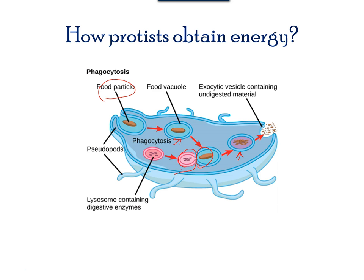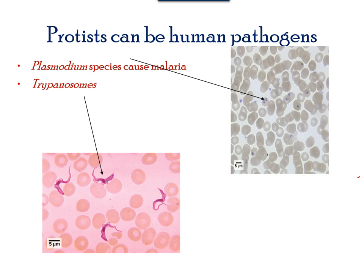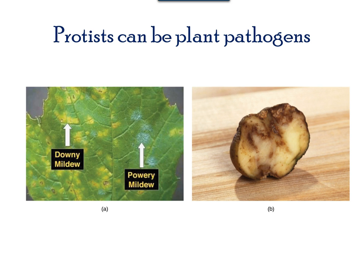Protists also reproduce by binary fission. Many protists are pathogenic and infect organisms. For example, Plasmodium infects mosquitoes and causes malaria, while Trypanosome is a parasite that infects blood cells. There are also plant-parasitic protists in nature that destroy food crops — the downy and powdery mildew found on leaves and potato late blight infections are two examples.